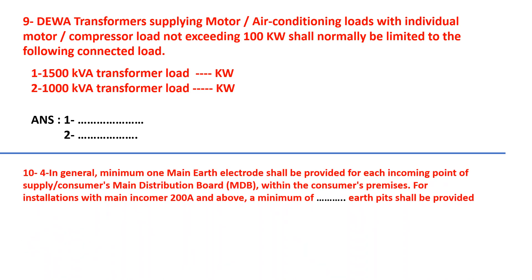Question number ten: in general, a minimum of one main earth electrode shall be provided for each incoming point of supply or consumer main distribution board within the consumer premises. For installations with main incoming current rated 200 amperes and above, a minimum of dash earth pits shall be provided. Options: A) 1, B) 3 in delta fashion, C) 3 in star fashion, D) 2. Select your answer.